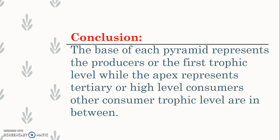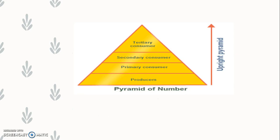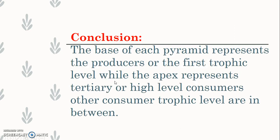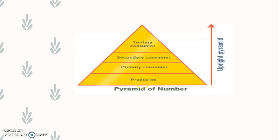In conclusion, the base of each pyramid represents the producers or the first trophic level, while the apex represents tertiary or high-level consumers. Other consumer trophic levels are in between. Producers or autotrophs are at the first trophic level, and top or tertiary consumers are at the topmost trophic level, with different types of consumers in between.